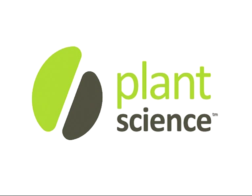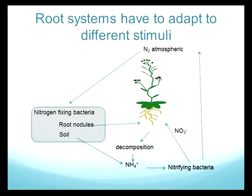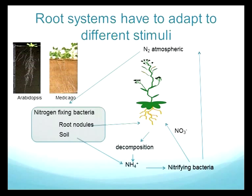My lab is mostly interested in how root systems can adapt to different macronutrient levels in the soil, especially nitrogen. As we all know, plants either get nitrogen directly from the soil or through symbiosis with rhizobium. We are interested in why some plants can have a symbiotic relationship with rhizobium and why other plants cannot. We look at two model organisms: Arabidopsis for non-legume plants and Medicago for legume plants.